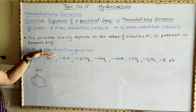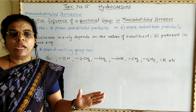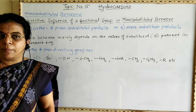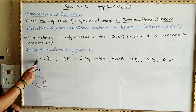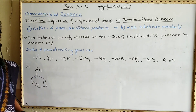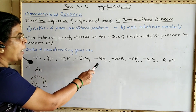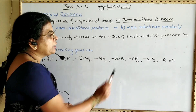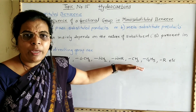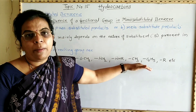Now we look at ortho and para directing groups. Groups which possess non-bonded electron pairs — lone pairs of electrons — are generally ortho and para directing. Examples include chlorine, bromine, OH, OCH3, NH2, and NHR. Alkyl groups such as CH3 and C2H5 do not possess lone pairs of electrons, but these alkyl groups are also ortho and para directing due to hyperconjugation.